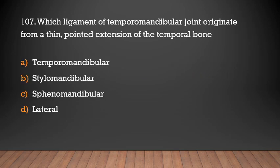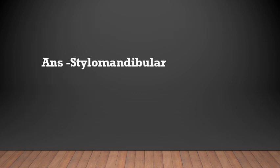Which ligament of the temporomandibular joint originates from a thin pointed extension of the temporal bone? Options: temporomandibular, stylomandibular, sphenomandibular, lateral. Answer: Stylomandibular.